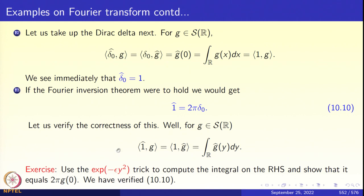We must use the definition of the Fourier transform directly. One-hat applied to G is by definition 1 applied to G-hat, which is the integral of G-hat(y) dy. To evaluate this, use the e^{-εy²} trick: write it as the limit as ε→0 of the integral of G-hat(y) e^{-εy²}. Then put the definition of G-hat as an integral, switch the order of integration, and apply the dominated convergence theorem. The integral of e^{-z²} dz over the real line equals √π, and the final answer works out to 2π times G(0), verifying equation 10.10.